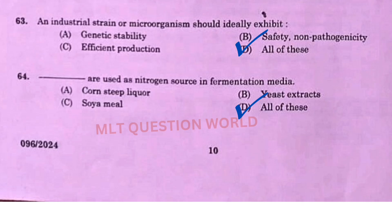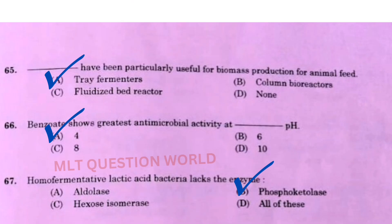Next question: An industrial strain of microorganism should ideally exhibit — the right answer is option D, all of these. Next one: Dash are used as nitrogen source in fermentation media — the right answer is option D, all of these. Next one: Dash have been particularly useful for biomass production for animal feed — the right answer is option A, tray fermenters.